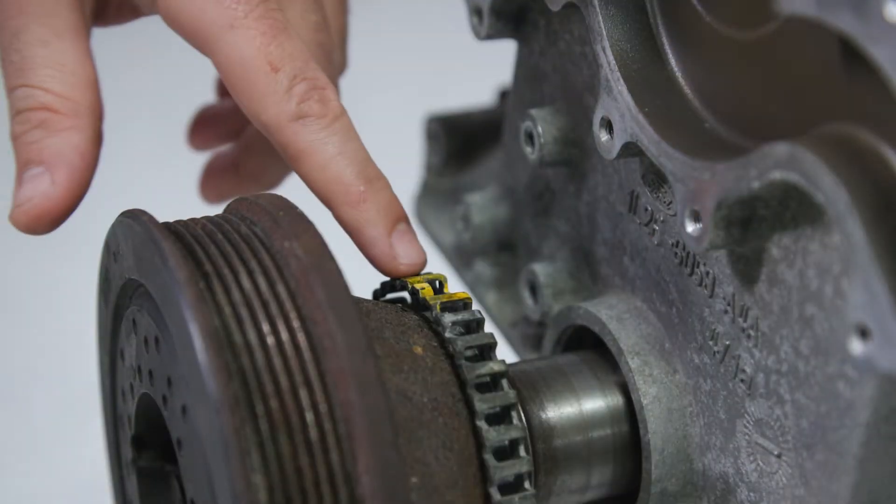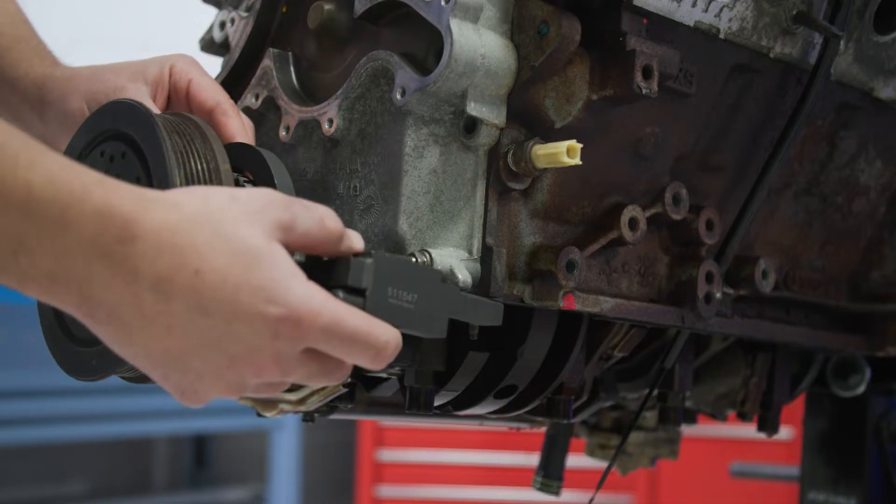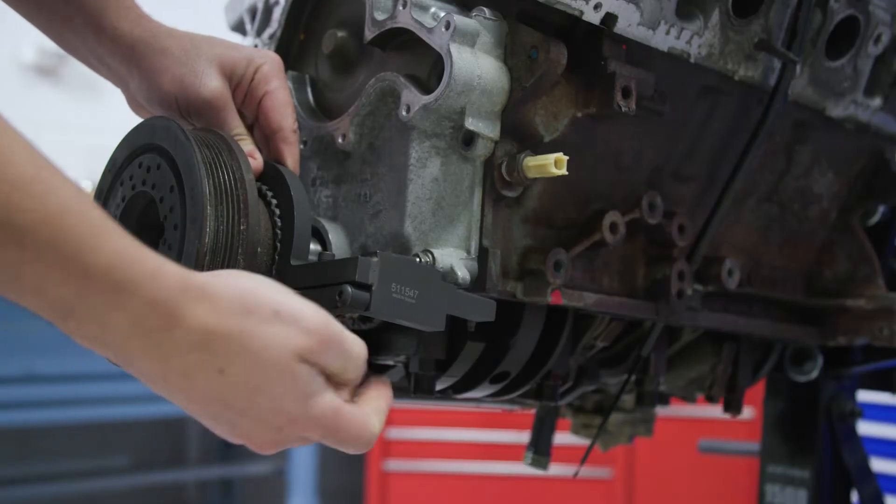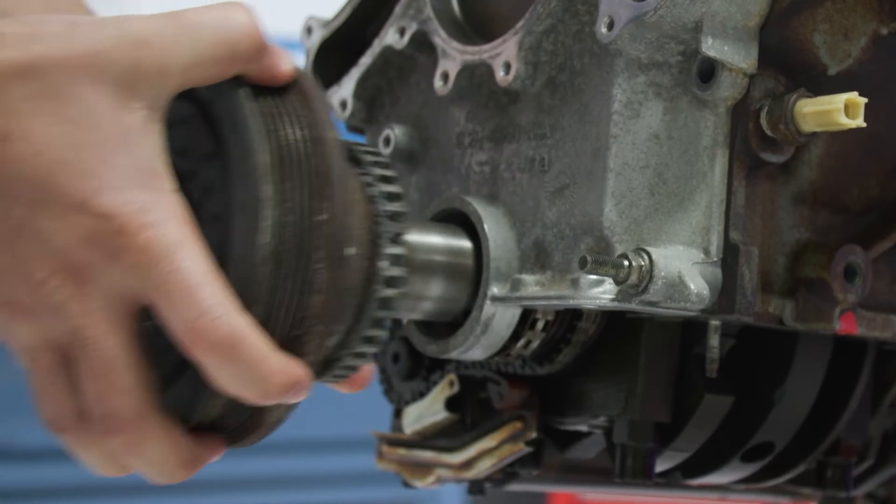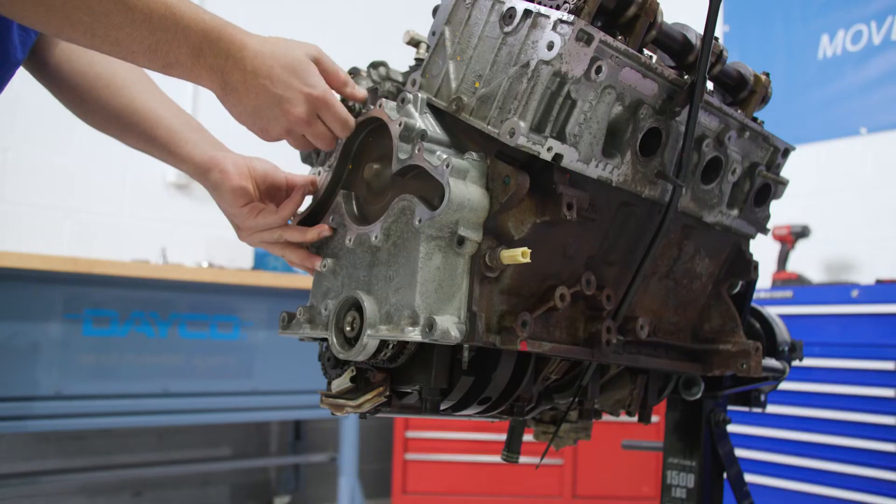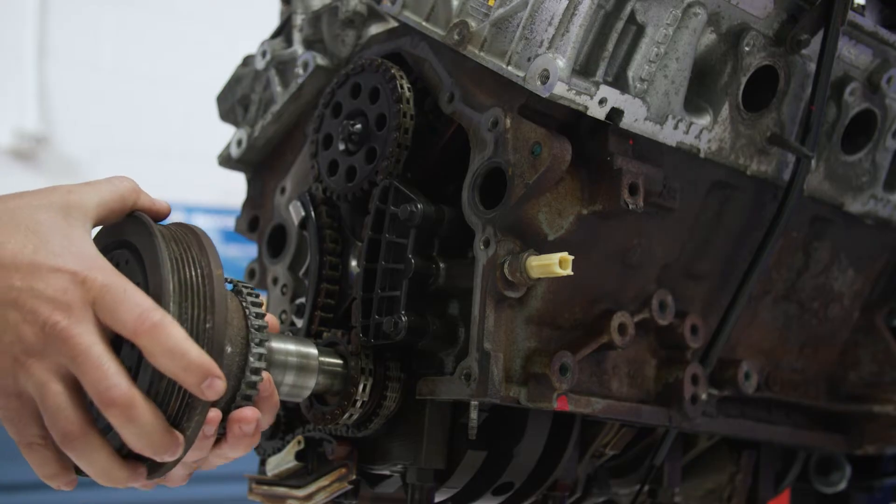Place the engine at top dead center using the top dead center tool. Now remove the timing cover and place the balancer back on the engine.